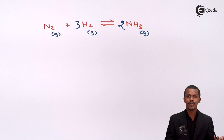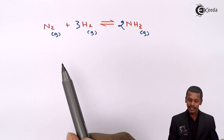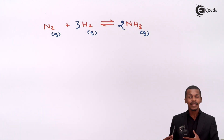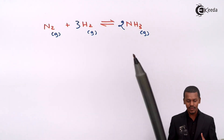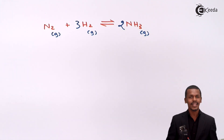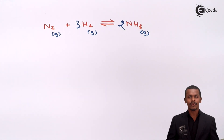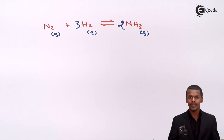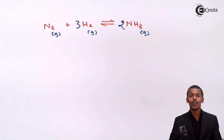In physical equilibrium, H2O is not converting into something chemically different — it is still composed of two hydrogen atoms and one oxygen atom. But in a chemical reaction like this one, a product is formed that is chemically different from the reactant, and that product has the tendency to give back the reactant. That is a reversible reaction, and only in a reversible reaction do we get chemical equilibrium.